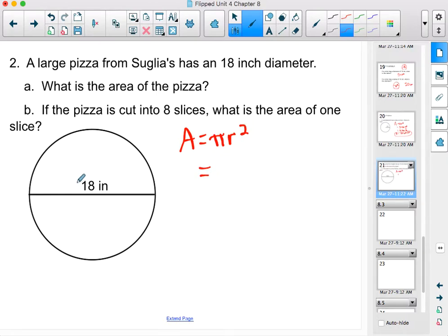A equals pi r squared. So our first job is to say, hey, we do not need to know the diameter. We need to know the measurement of the radius. So 18 divided by 2 is 9 inches. That's the number I'm going to put in for r.